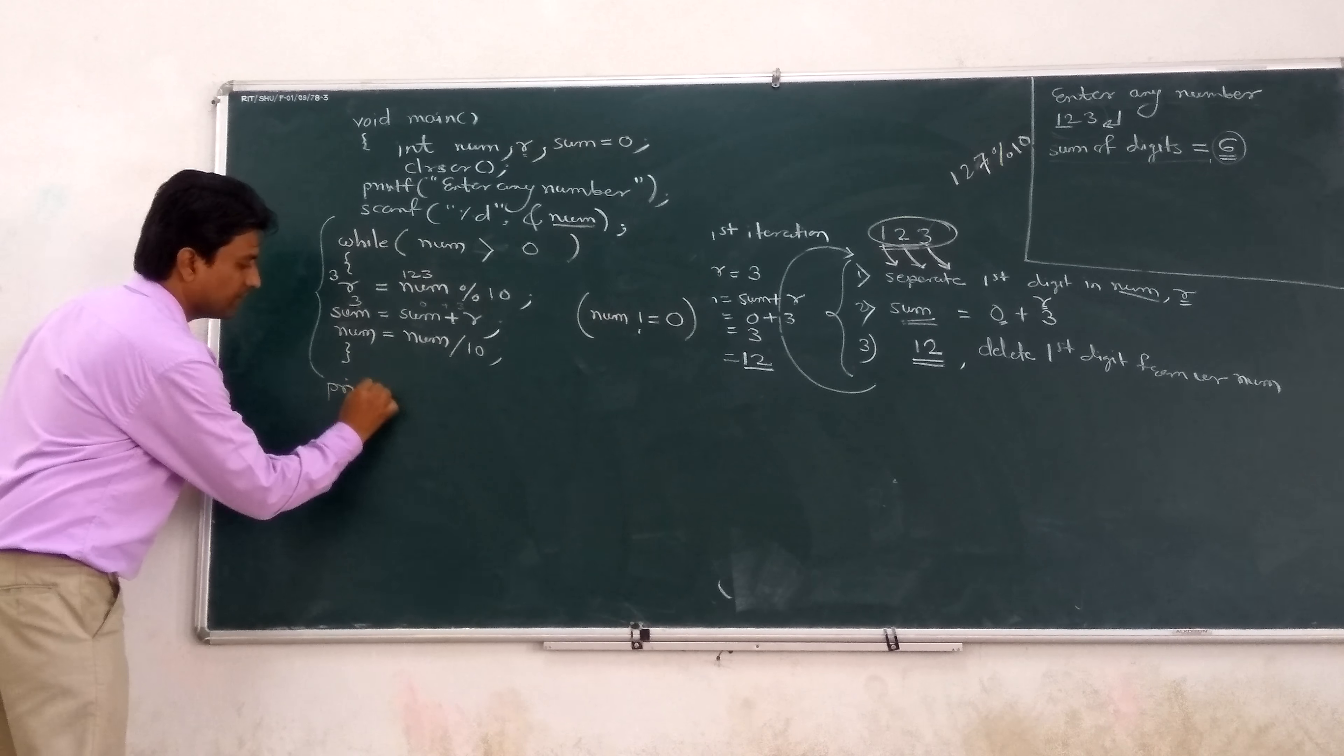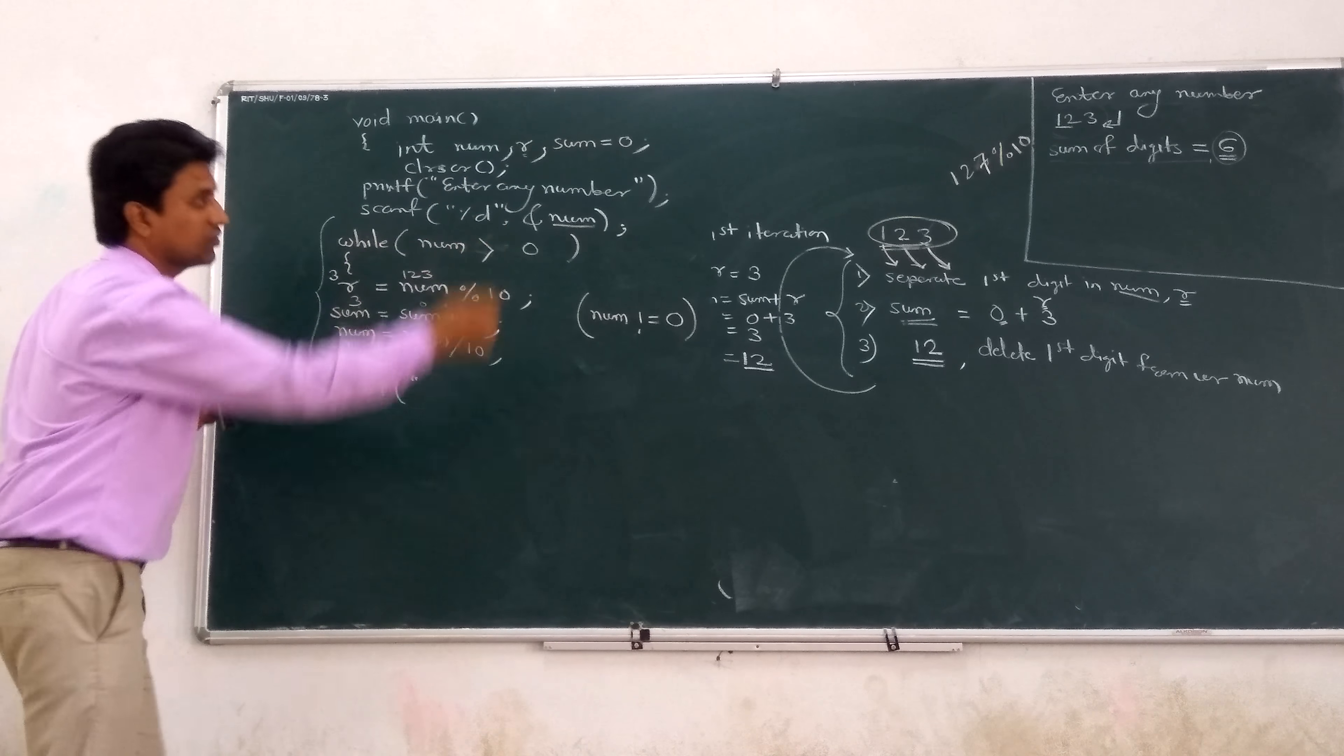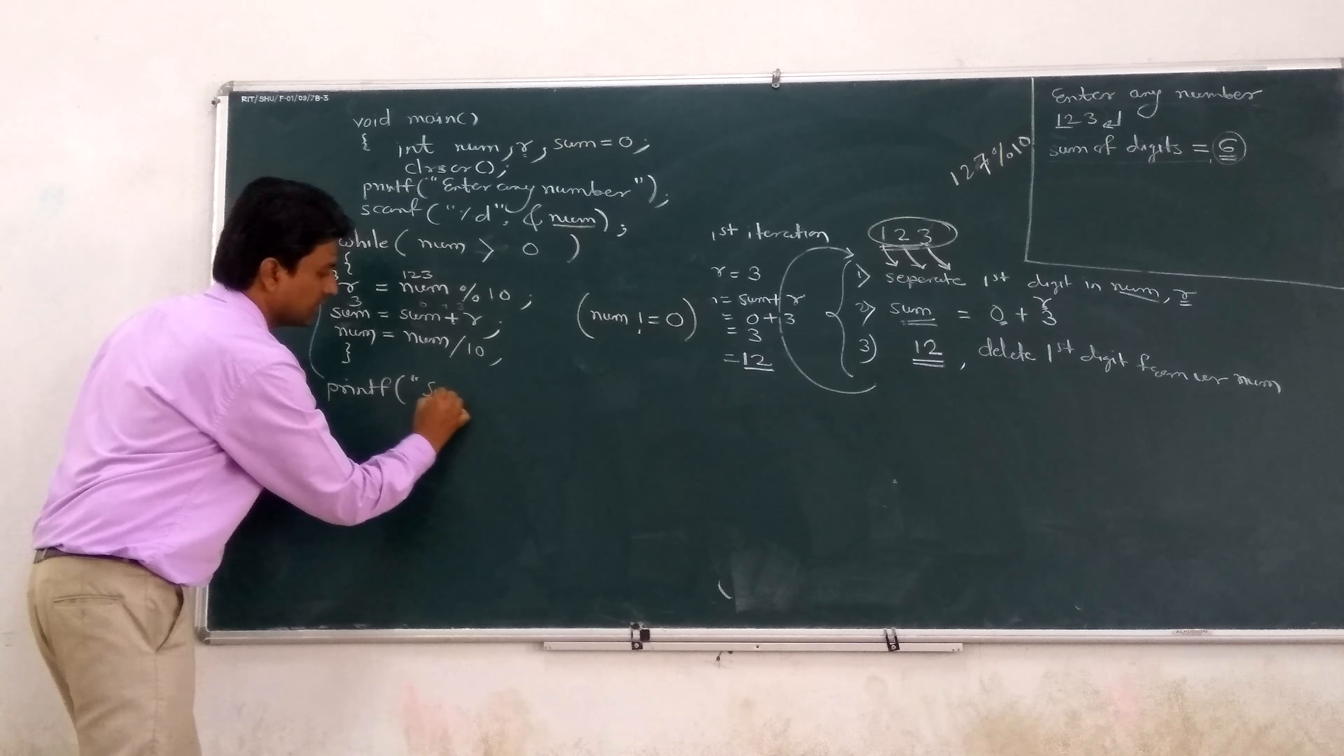The last output statement: sum of digits is equal to - because it is a variable part where actually sum is stored somewhere. So write sum here, semicolon, then gets here.